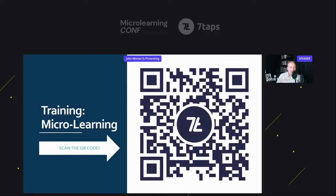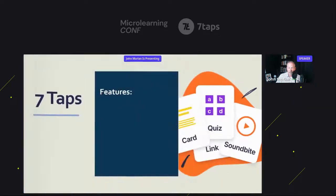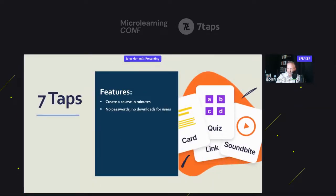SevenTaps — use a QR code. That's the way to go. It's magic. A couple of features I always focus on when talking to companies about SevenTaps: the simple distribution and no passwords. Make people's lives easy. Simplify.